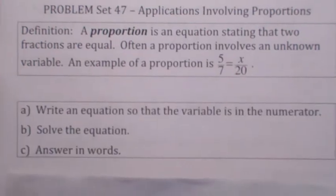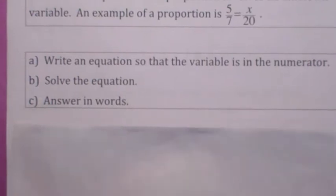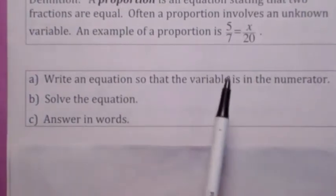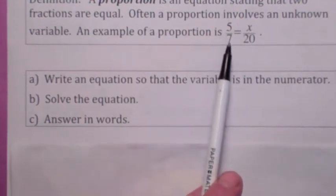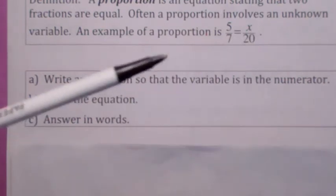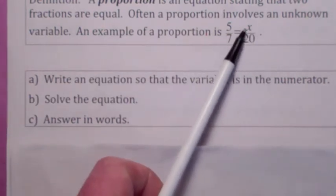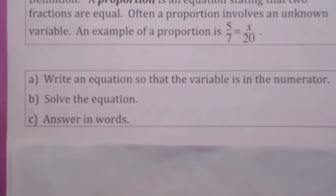When we set these up, we're going to always set them up so that the variable is always in the numerator. You can do that as long as you're consistent. So when you write the equation, make sure you set up the ratios so that the variable they're asking you to find is in the numerator. Solve the equation and then answer in words. So I'll show you what I'm talking about here.